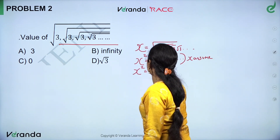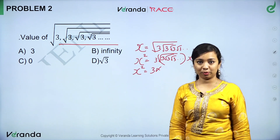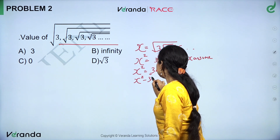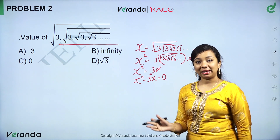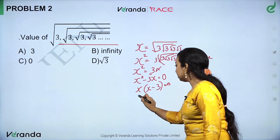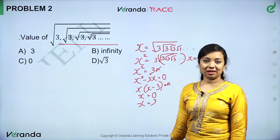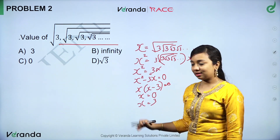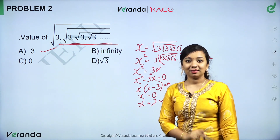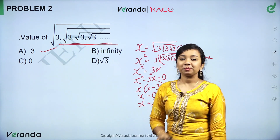So x squared equals 3x. Moving 3x to the other side: x squared minus 3x equals 0. So x(x minus 3) equals 0. Since x cannot be zero, the answer is x equals 3. This is a shortcut — if the number inside is 5, the answer is 5.